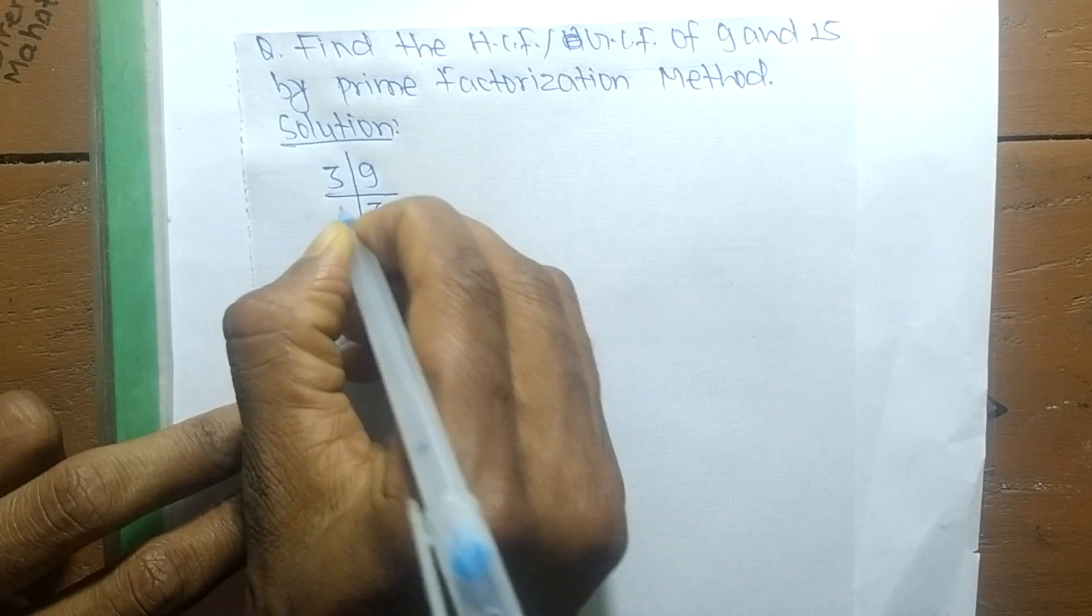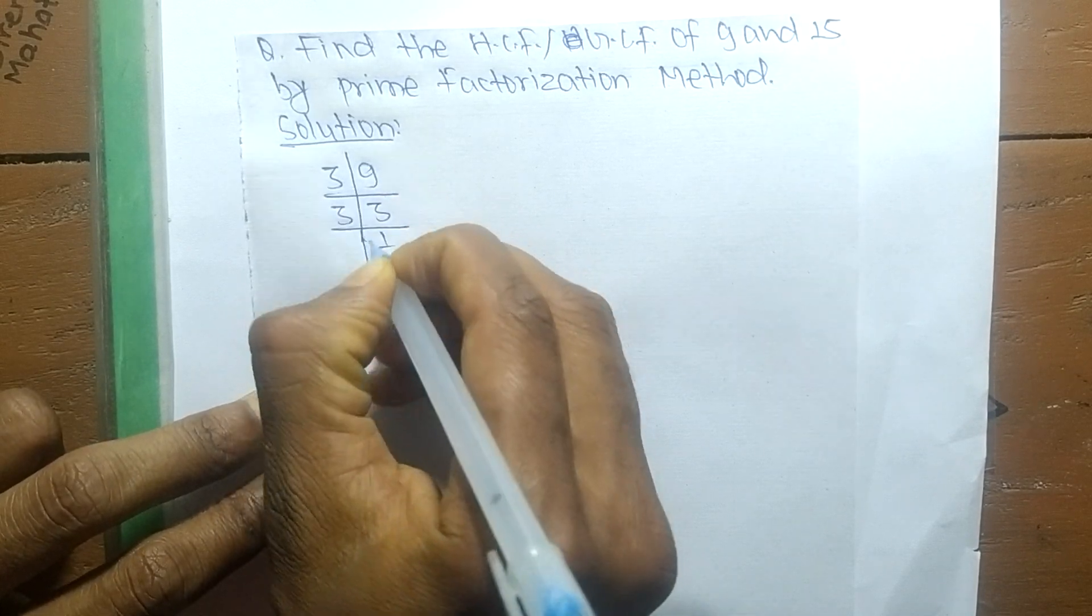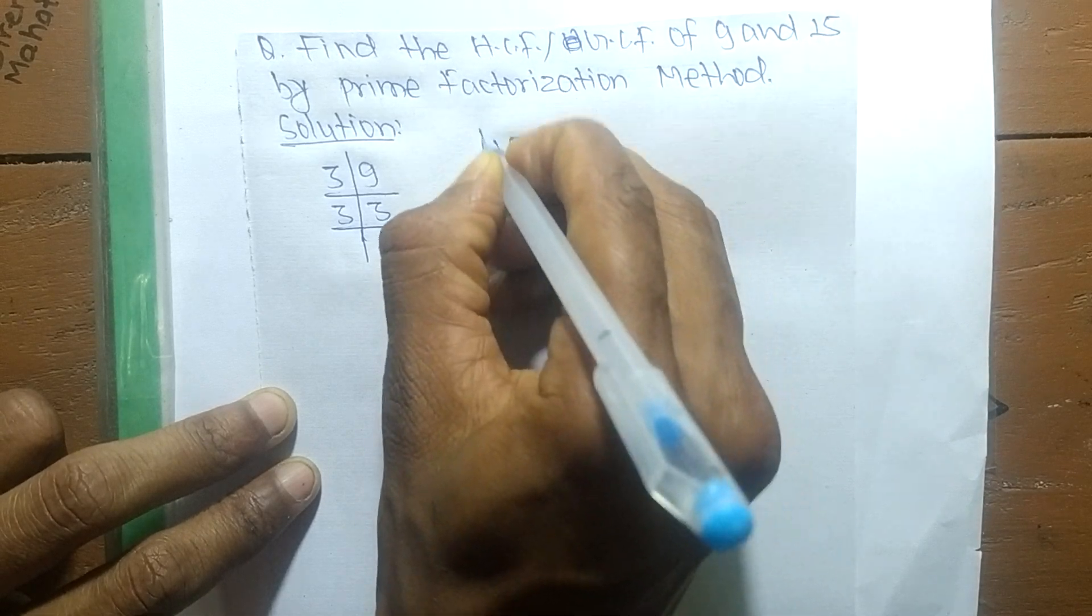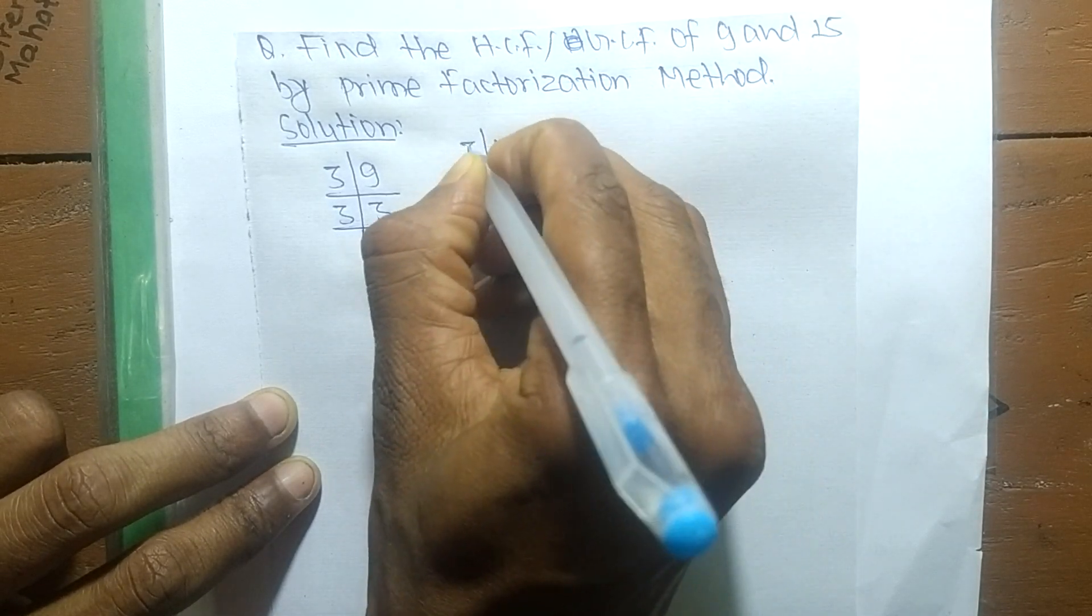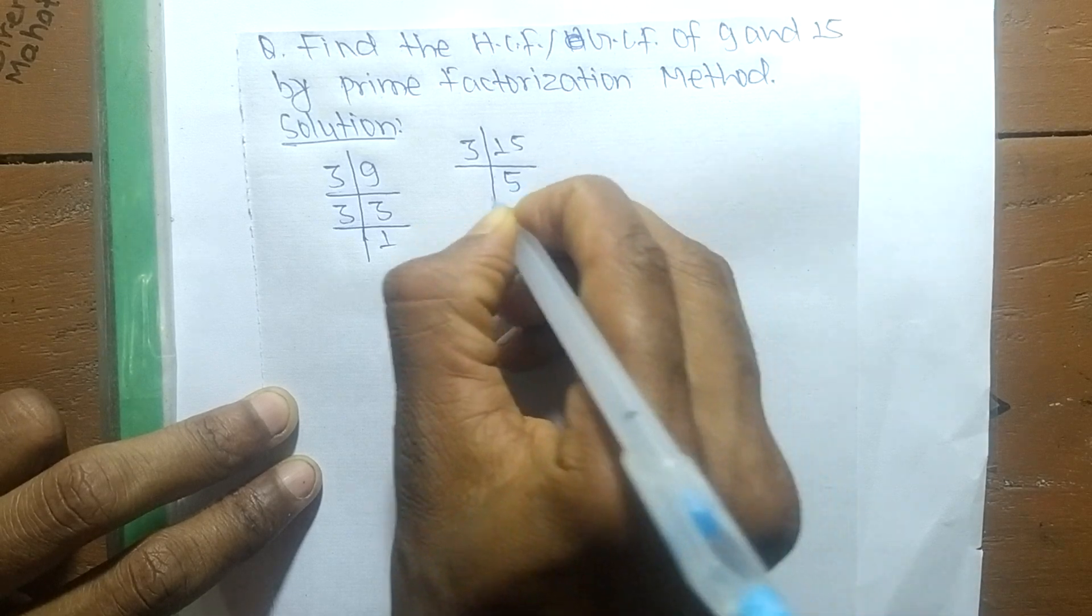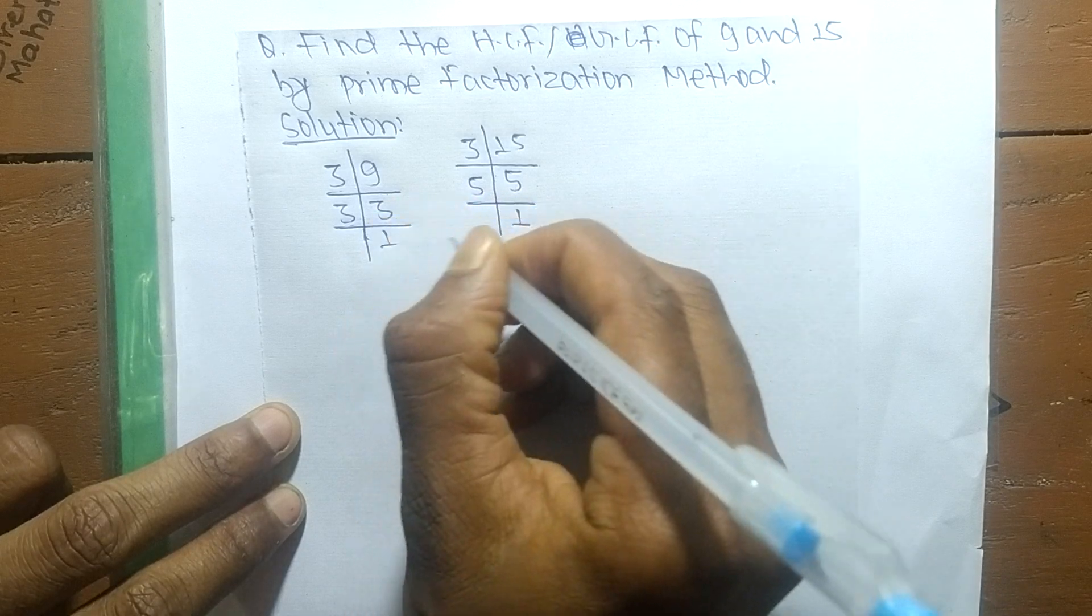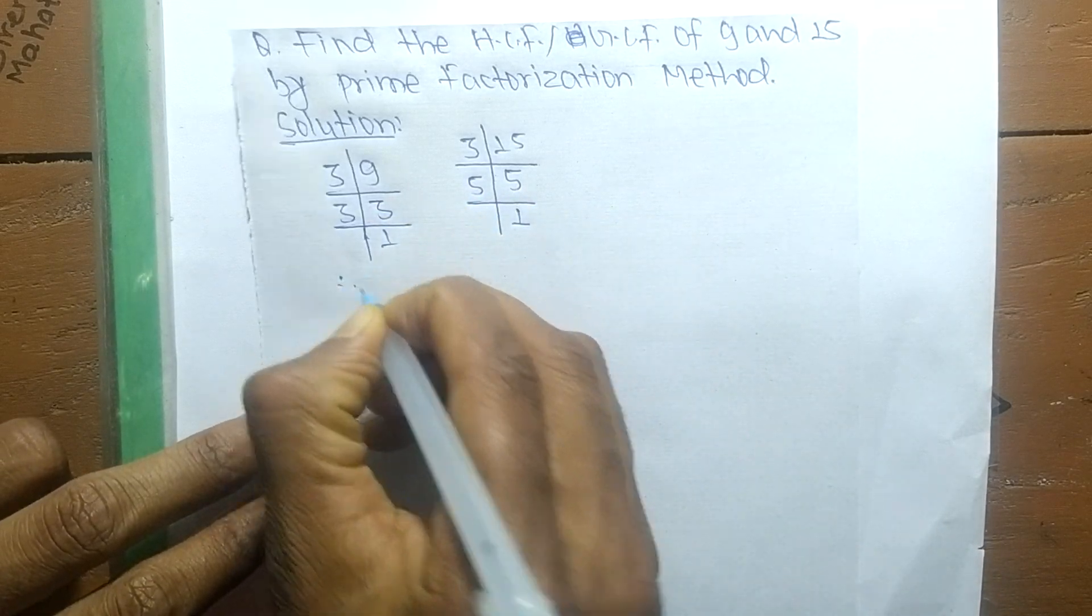In the same way, the prime factors of 15 is 3 times 5 equals 15, and 5 times 1 equals 5. So from these prime factors, we can write 9 equals 3 times 3, and 15 equals 3 times 5.